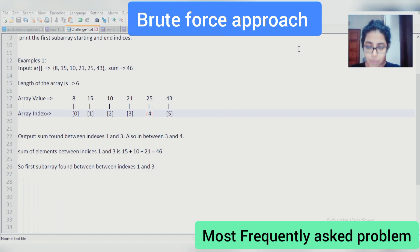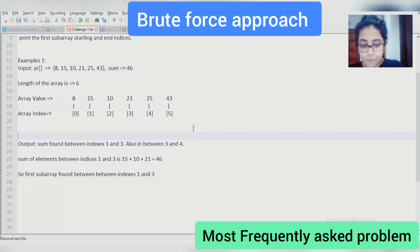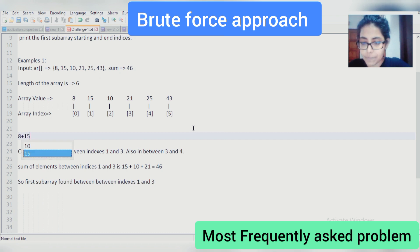Let's understand this problem with one example first. Suppose you are given this array, consisting of 6 elements, and you need to find out the subarray in which sum of the elements matches 46. Let's start with it. First, we'll start from the 0th index. 8 plus 15 is 23. Then 15 plus 10 is 33. Then 33 plus 21, how much? 54.